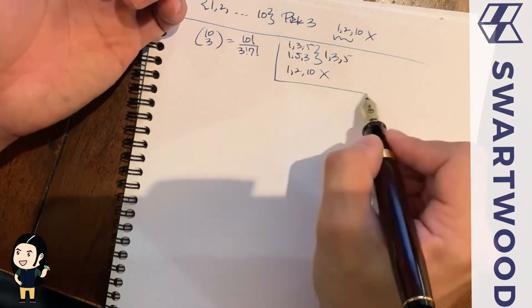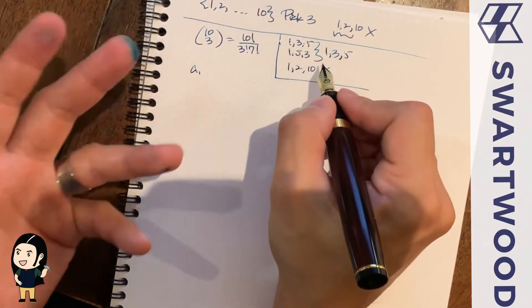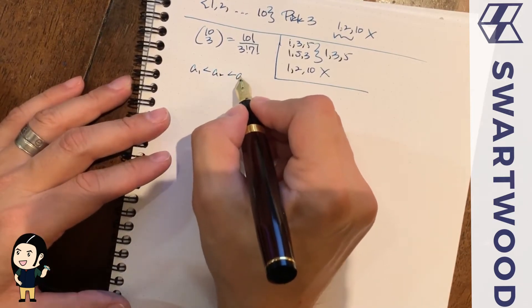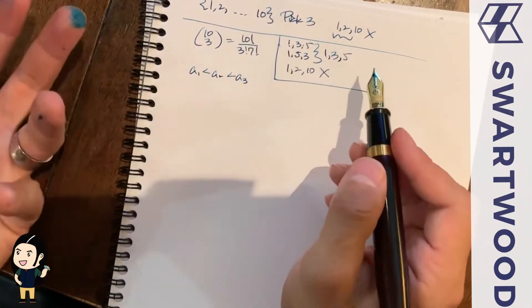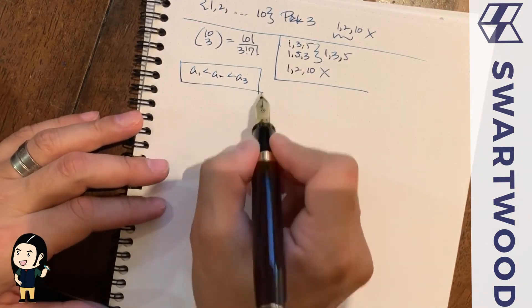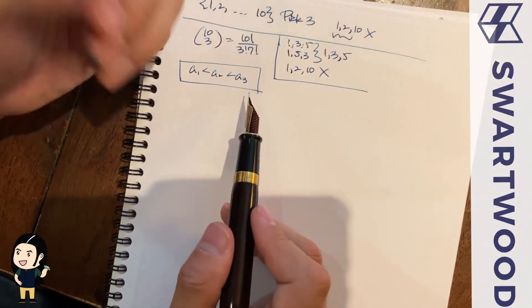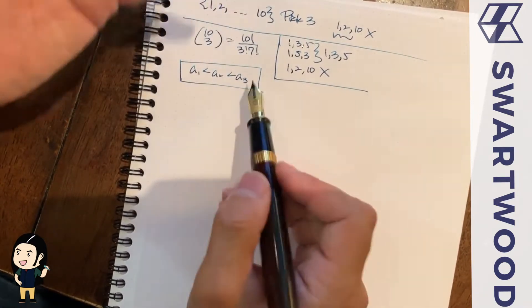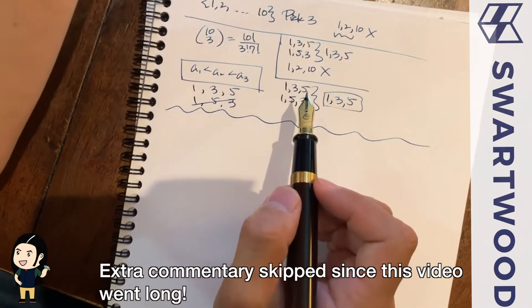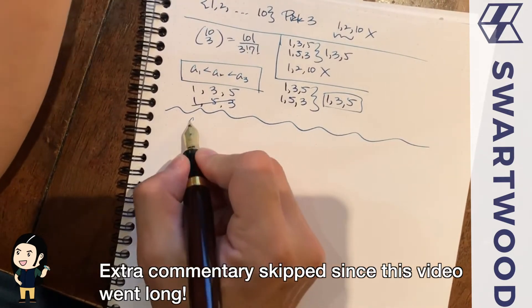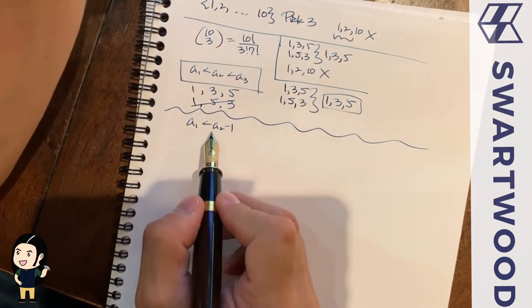So how do we fix this? If you take any picked numbers, you can always put them in order. Since we're not replacing numbers, all picks must be different — so we want a1 < a2 < a3, picking from 1 to 10. The problem is we need to impose the condition that none of the numbers are back-to-back, meaning we need a gap between them.